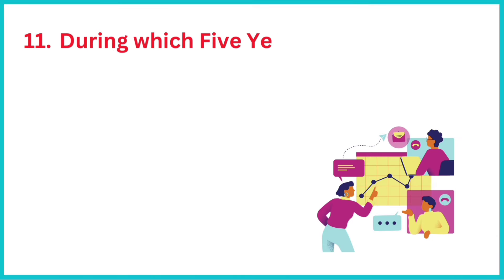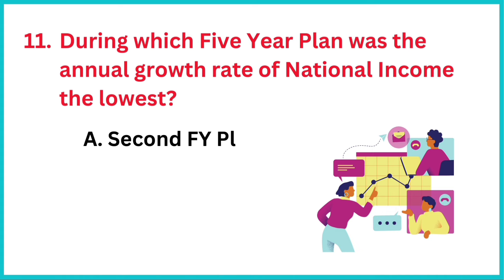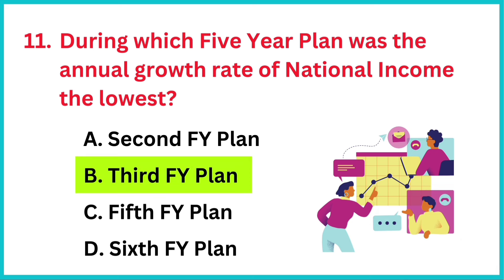During which five-year plan was the annual growth rate of national income the lowest? The correct answer is option B: the Third Five-Year Plan.